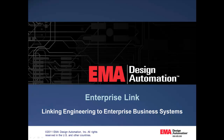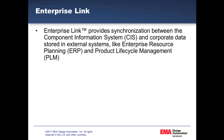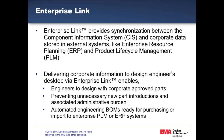This movie is a presentation of EMA's EnterpriseLink product. EnterpriseLink provides synchronization between the Component Information System, CIS, and corporate data stored in external ERP and PLM systems. EnterpriseLink delivers corporate business information at the engineer's desktop. Engineers can design with corporate-approved parts, preventing unnecessary new part introduction and associated administrative burden. Automated engineering BOMs are ready for purchasing or import to the enterprise's PLM or ERP systems.